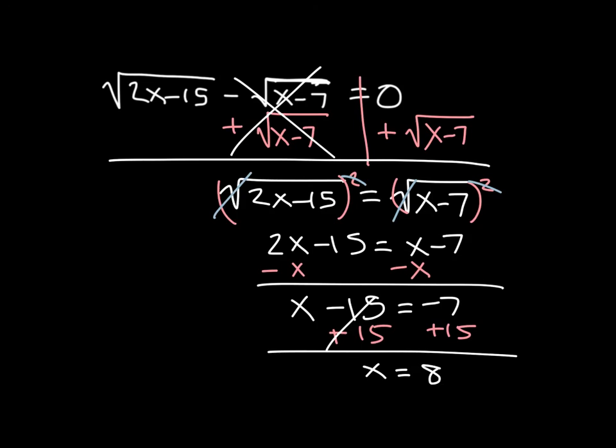Again, before I circle that I want to make sure that it works in the original problem. So 2 times 8 minus 15 minus the square root of 8 minus 7. And does that equal 0?